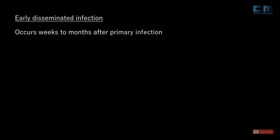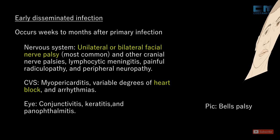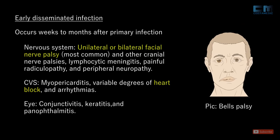The next stage of Lyme disease is early disseminated infection. This stage occurs weeks to months after the primary infection. Along with constitutional symptoms, symptoms specific to various organs start to manifest, where cardiac and neurological symptoms predominate. Common nervous system presentations include unilateral or bilateral facial nerve palsy and other cranial nerve palsies, lymphocytic meningitis, painful radiculopathy, and peripheral neuropathy.